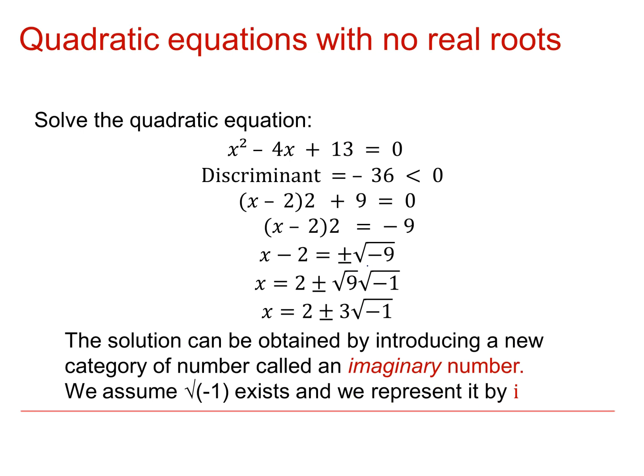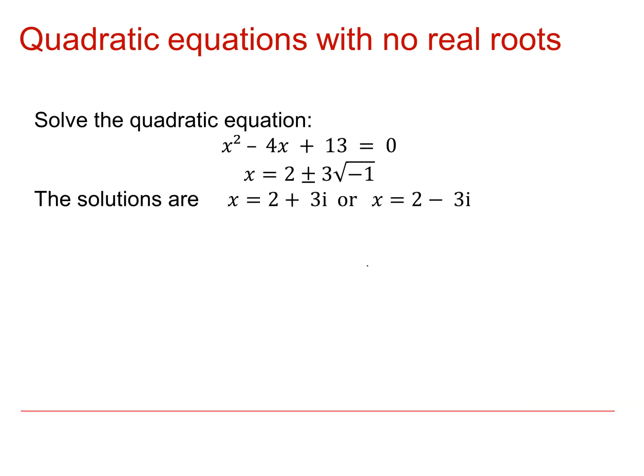So instead of our solution being x equals 2 plus or minus 3 times the square root of minus 1, we're going to get x equals 2 plus or minus 3i. So we've still got two solutions, 2 plus 3i and 2 minus 3i.